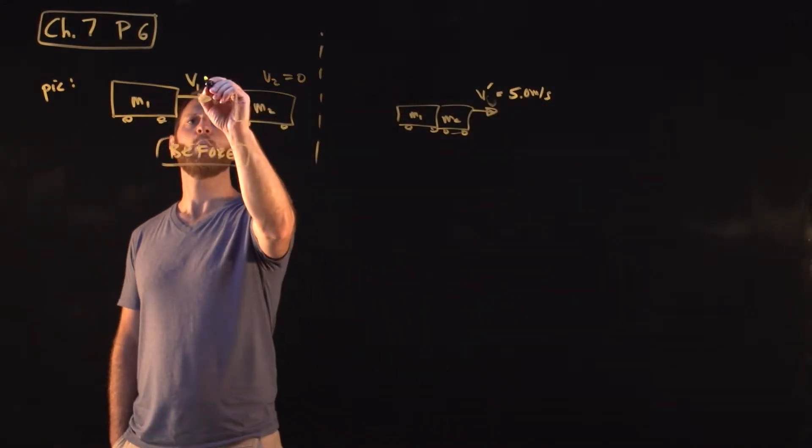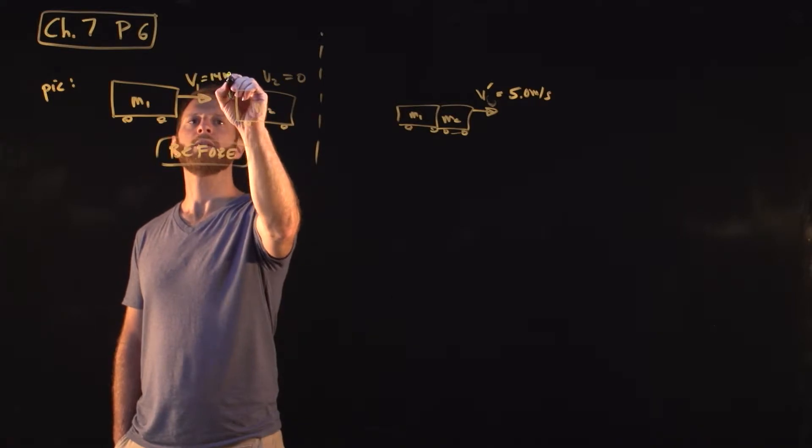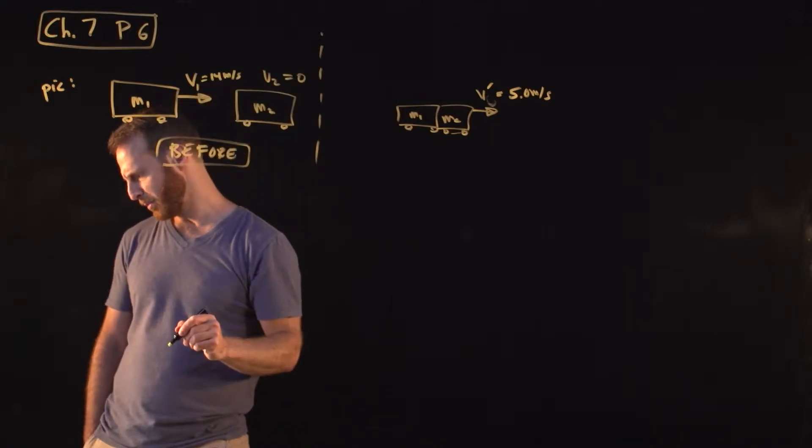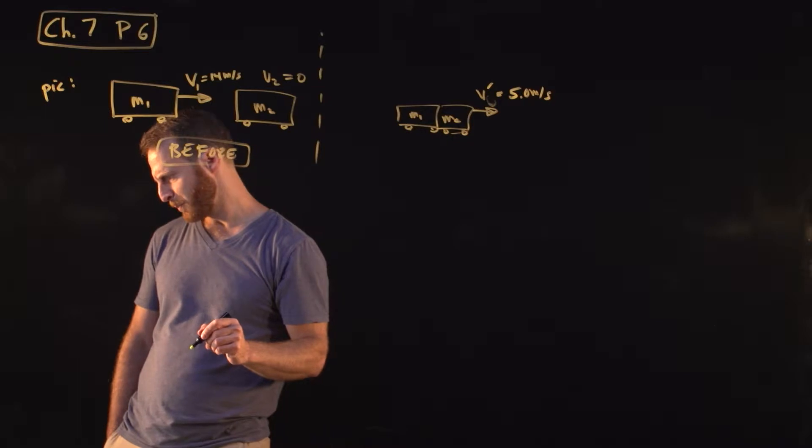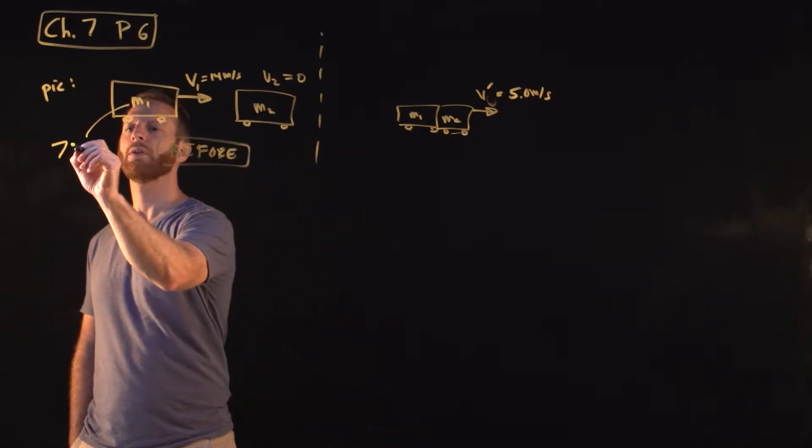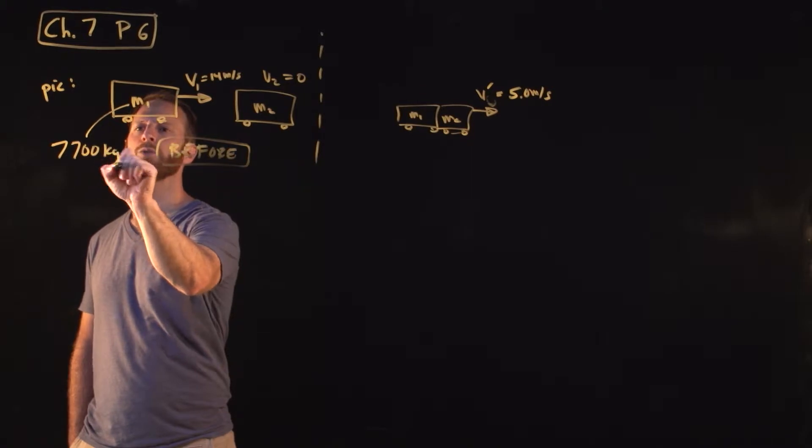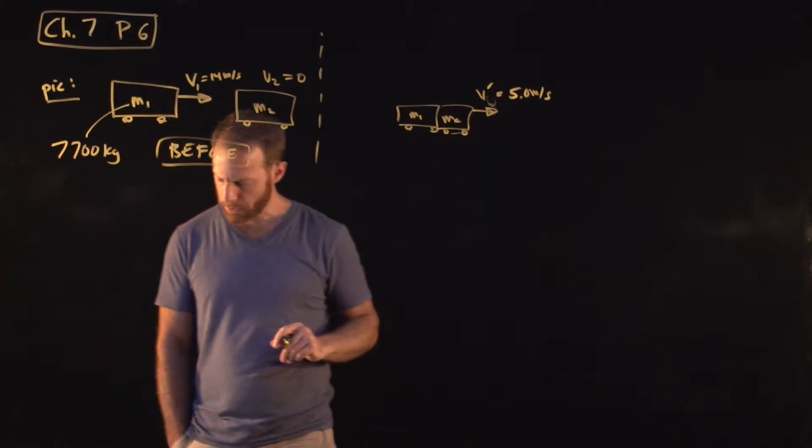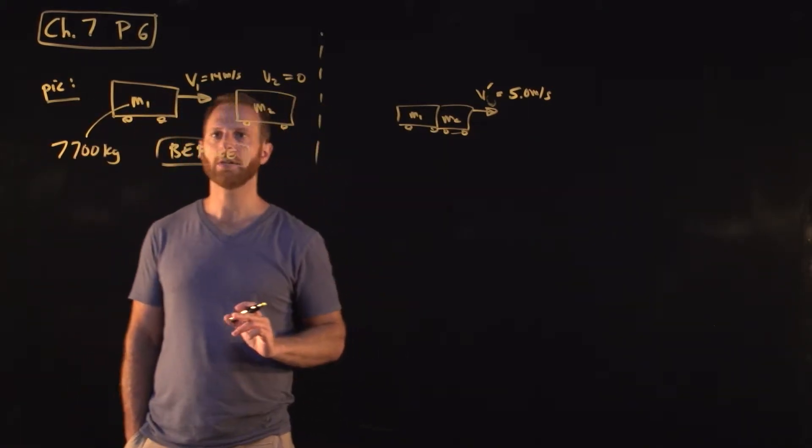Initially, V1 is 14 meters per second, and the other piece of information that we know is that M1 is 7,700 kilograms. Okay, so this is a classic kind of collision problem.